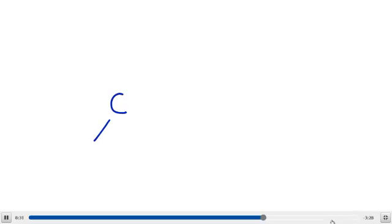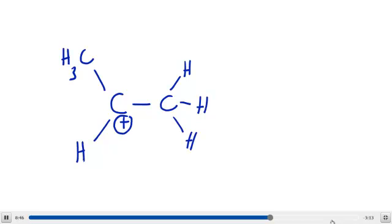So, we have here our carbocation that we formed in the previous step. And, like we've mentioned previously, it needs to be able to stabilize itself. It needs to take care of the fact that it doesn't have an octet. It's got a positive charge.